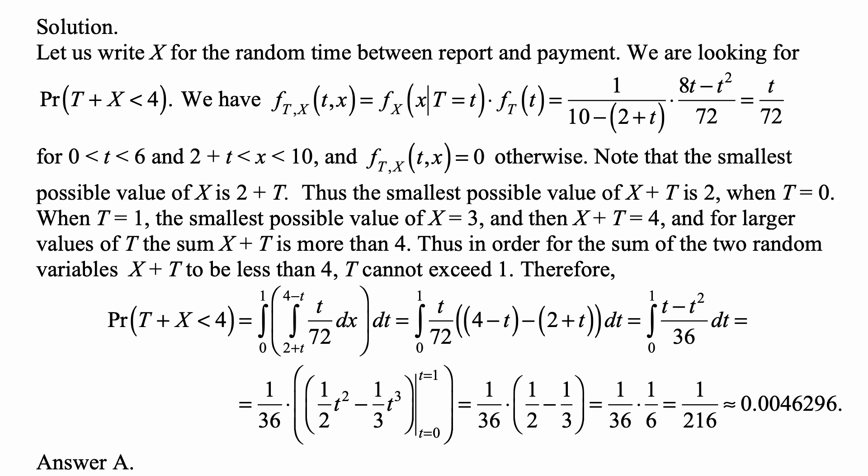Therefore, the values of t which are more than 1 automatically produce values of x+t that are more than 4. In the event that we want to happen, x+t less than 4 doesn't happen. Thus, in order for the sum of the two random variables x+t to be less than 4, t cannot exceed 1. And therefore,